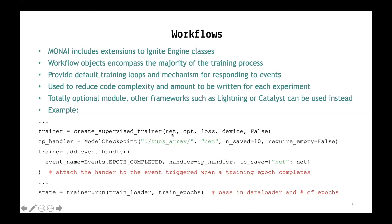A trainer is created based on a network — the network could have been one of the ones from the previous slides. Then here you can see we're creating a checkpoint handler, which is going to save the current state of the network. With n equals 10, it's going to save the 10 most recent versions, so as you create the 11th, you'll delete the first. Then add that as an event so it gets run at the end of each completed epoch, and then set the trainer to run. This should help you condense and simplify your code.